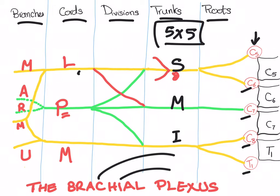This superior trunk will give two branches. One of them is called supra, which means above, and one of them is called sub, which means below. So one above and one below. What's the supra? It's called the suprascapular nerve, and what's the sub? It's the nerve to subclavius.